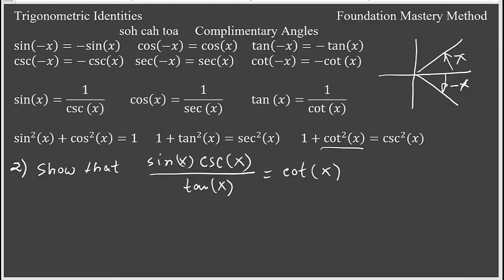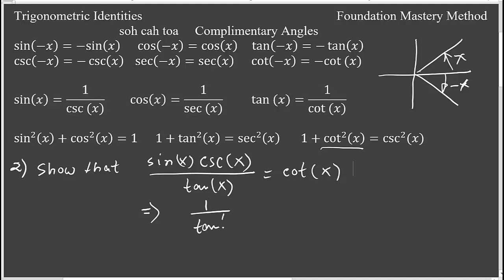Next, we show that cosecant x over (cosecant x times tangent x) equals cotangent x. It is just a one-line solution. From the left side, the cosecant x cancels, leaving 1 over tangent x. And we know that 1 over tangent x is cotangent x. We are done.